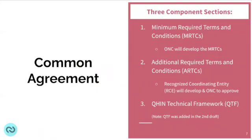The Common Agreement is broken into three sections. The first is minimum required terms and conditions — the MRTCs — developed by ONC, the Office of the National Coordinator. The second layer is additional required terms and conditions — the ARTCs — developed by a recognized coordinating entity, which went out to public tender, with ONC approval before incorporation. The third component is a technical framework associated with QHINs, qualified health information networks, which was only added in the second draft.